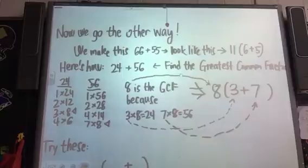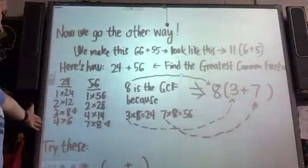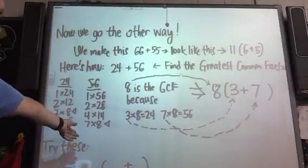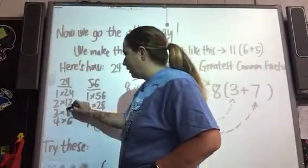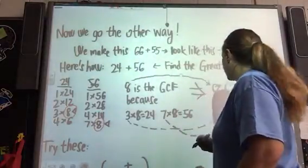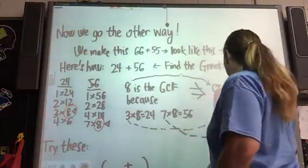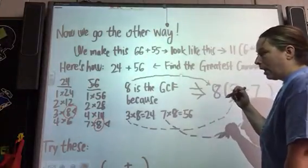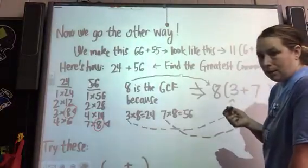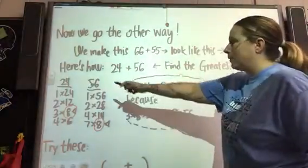So Mr. Krause already set this one up for us and he does not big on factor trees like I am. So he did it this way, where he lined up all the multiples of 24 and then all the multiples of 56 and he noticed that over here we have an 8 in common. So 8 is the greatest common factor between 24 and 56.